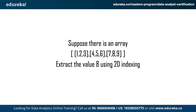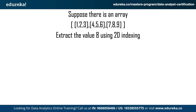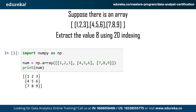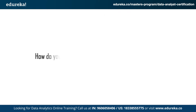The next question: suppose there is an array with certain values — extract the value 8 using 2D indexing. To answer this, start by creating your NumPy array and pass in the same values as given. If you check your array, the value 8 lies in the third row and the second column. But since indexing in Python starts from zero, the third row becomes index 2 and the second column becomes index 1. So if you type those indices you will get your answer. The next question is: how do you select specific columns from a data frame? You start by typing the data frame name with two sets of square brackets, then type the names of the columns you want inside the inner square brackets.